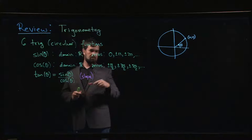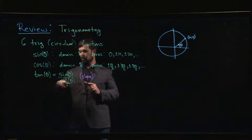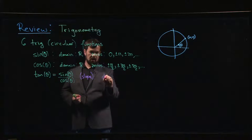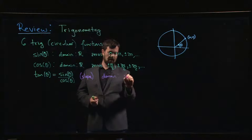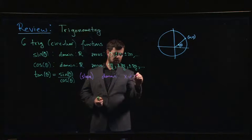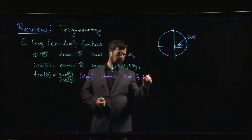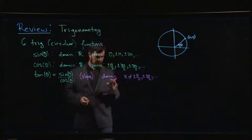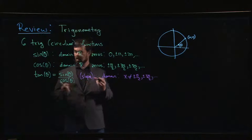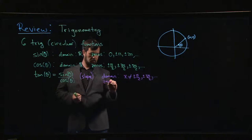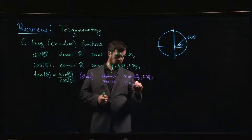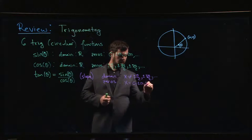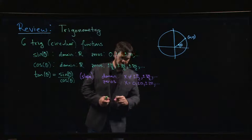The reason I mentioned the zeros for cosine is that tangent is given by dividing sine by cosine, so the domain for tangent excludes any x where cosine is zero — that means x cannot equal plus or minus pi over 2, plus or minus 3pi over 2, and so on. But tangent equals zero at all the places where sine equals zero: at x equal to zero, plus or minus pi, plus or minus 2pi, and so on.